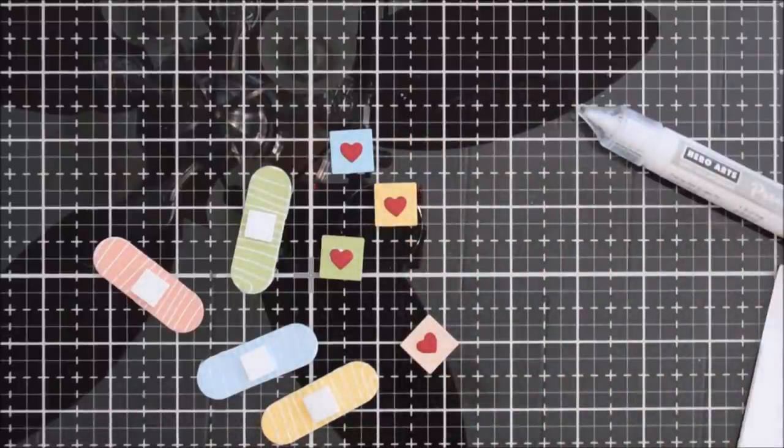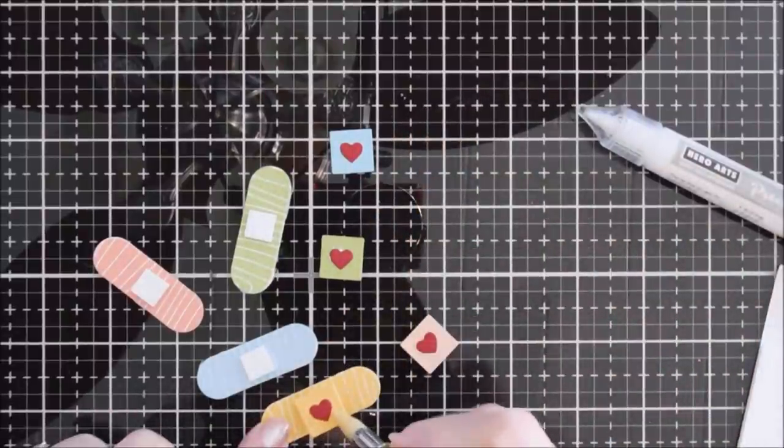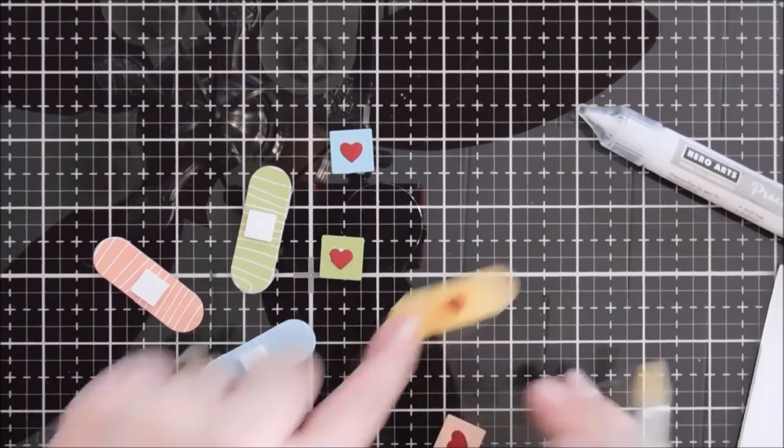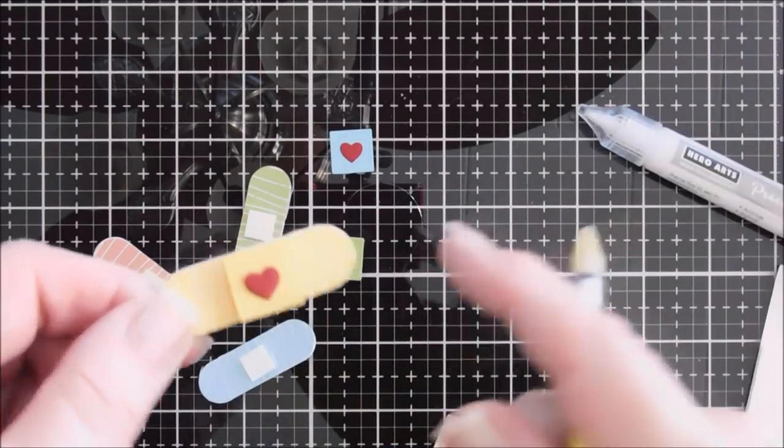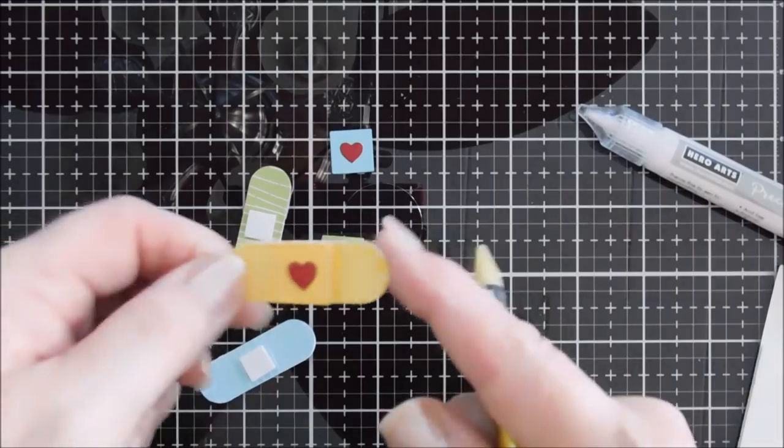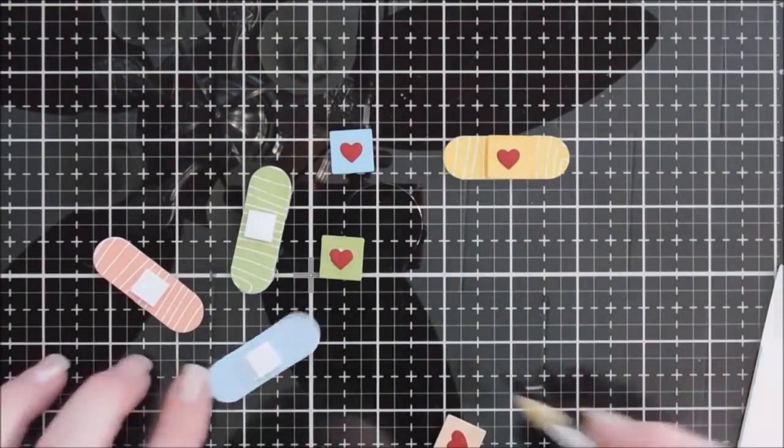The pattern paper is kind of drowning it out but it's there to help you line it up right in the center. It makes it easy. We're going to grab the jewel picker and pick up each one of our band-aid centers. We'll add the yellow to the yellow. Lovely. Got a little dimension.